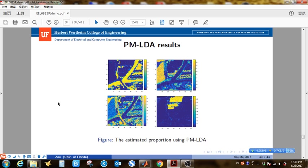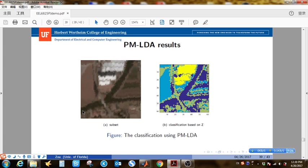Then this is the proportion map for each end-member in each pixel. So PM-LDA did a good job separating different end-members.